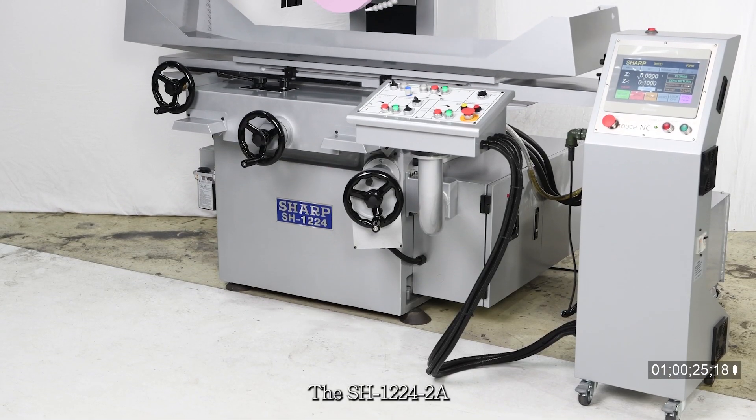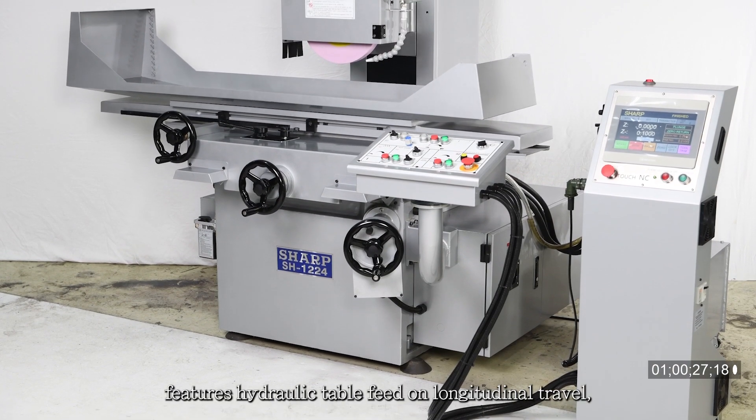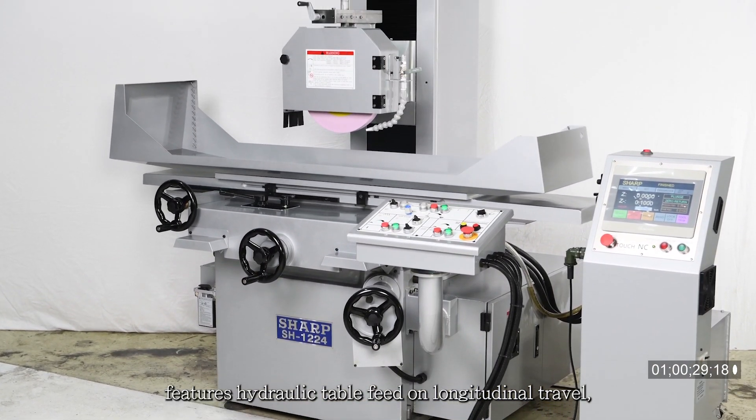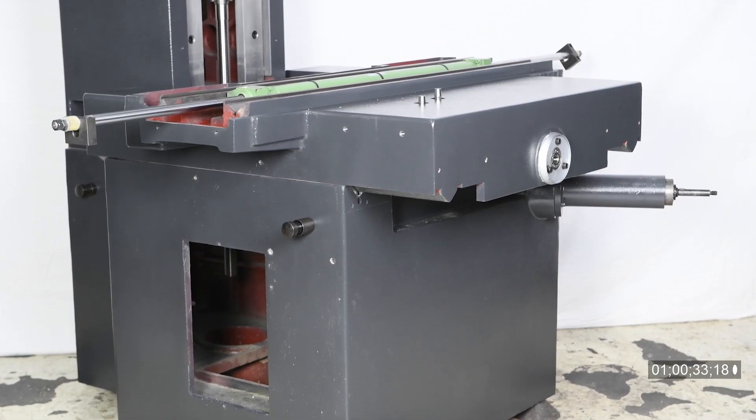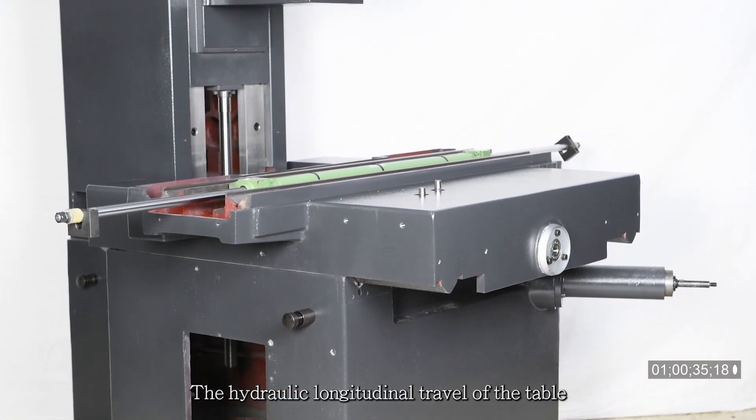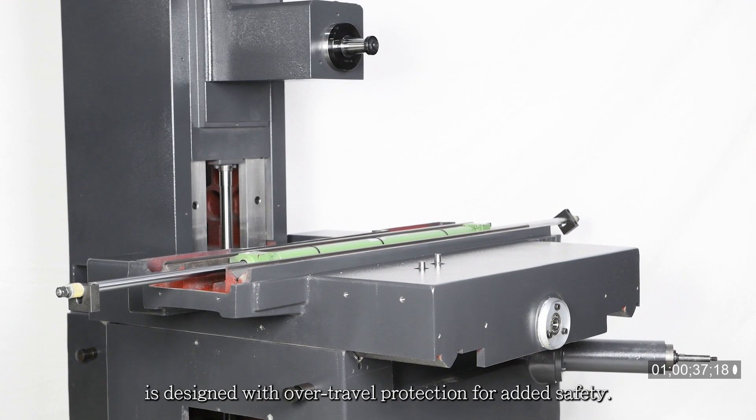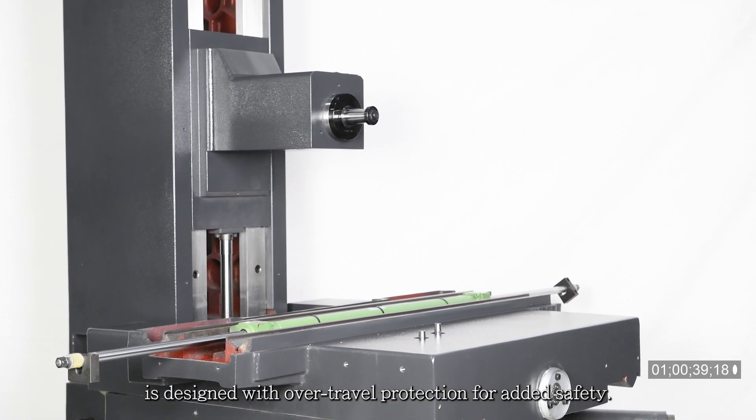The SH-1224-2A features hydraulic table feed on longitudinal travel and power feed on cross travel. The hydraulic longitudinal travel of the table is designed with over-travel protection for added safety.